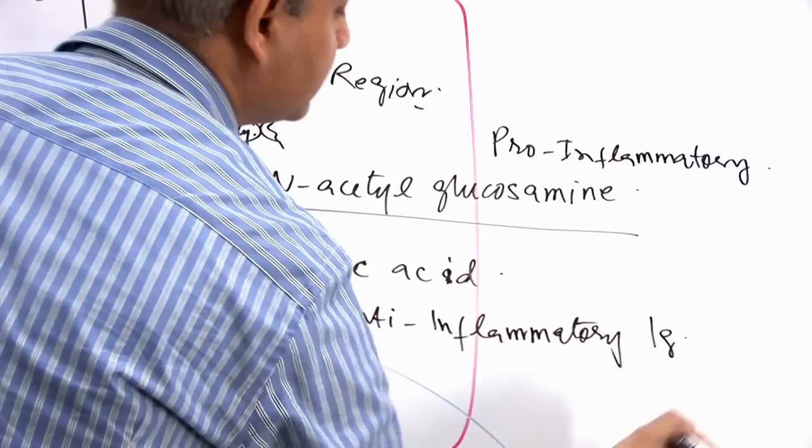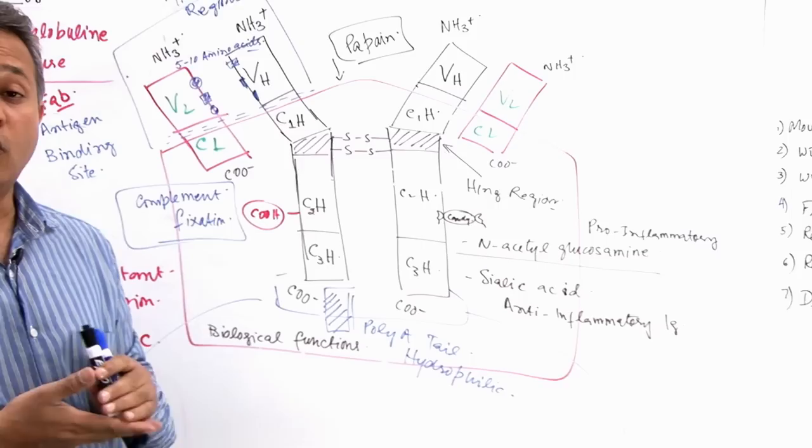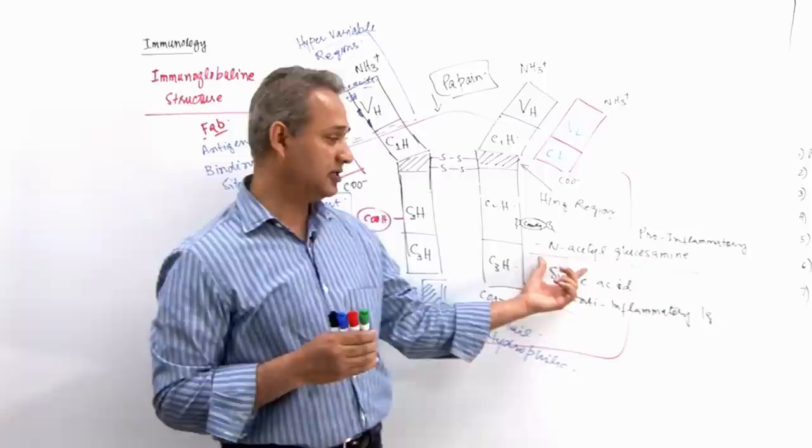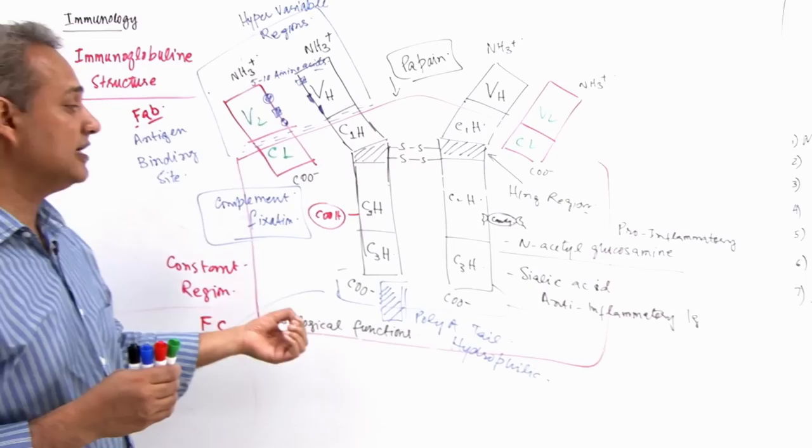So, same immunoglobulin, IgG, can be pro-inflammatory or anti-inflammatory depending upon what saccharide, what carbohydrate is attached. If it is N-acetylglucosamine, then it is pro-inflammatory immunoglobulin. If it is sialic acid, then it is anti-inflammatory immunoglobulin.